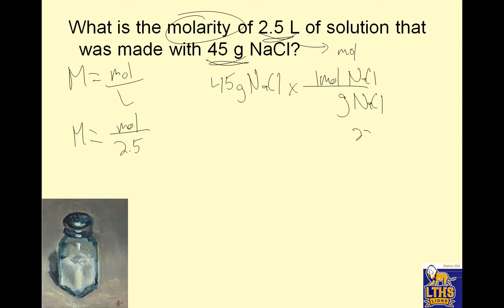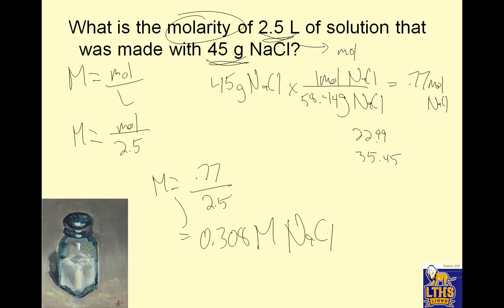This will tell me how many moles. 45 divided by 58.44 equals 0.77 moles of NaCl. So now I'm a little bit closer. Molarity equals 0.77 moles over 2.5 liters. 0.77 divided by 2.5, and I have 0.308 capital M, so I'd read that 0.308 molar sodium chloride.